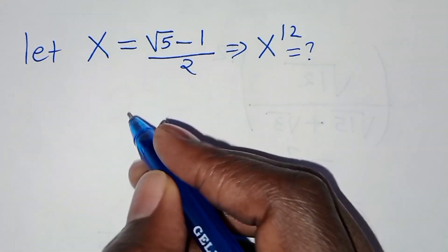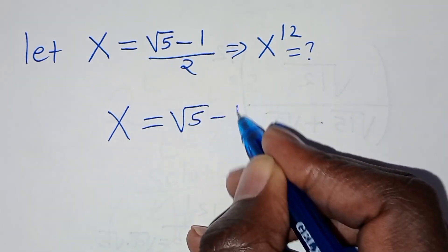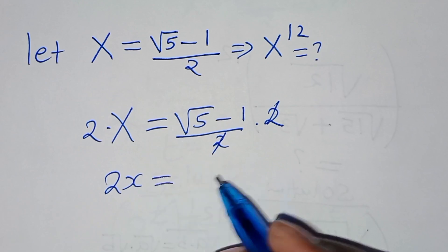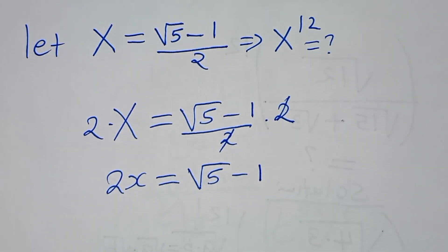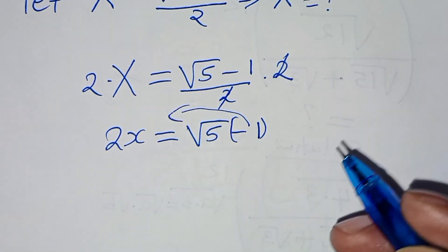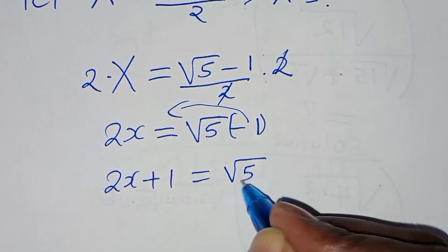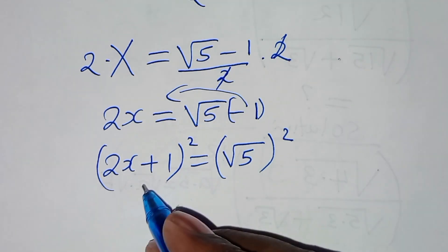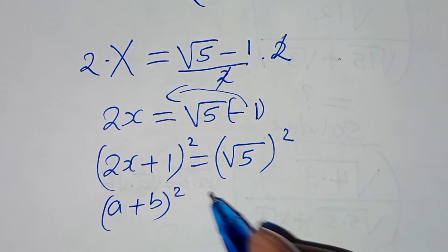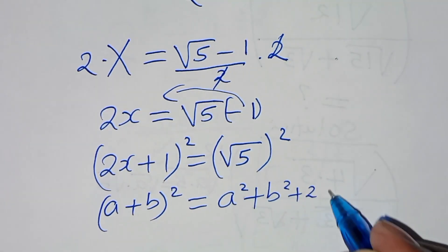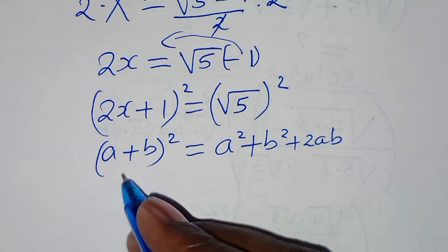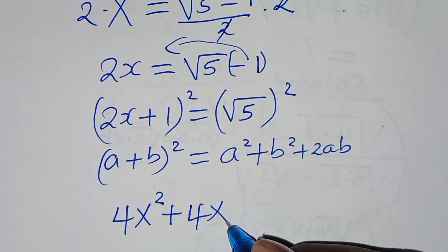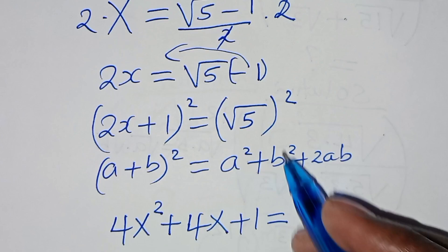From x equals square root of 5 subtract 1 over 2, we multiply both sides by 2 to get 2x equals square root of 5 subtract 1. Taking negative 1 to the left-hand side gives 2x plus 1 equals square root of 5. Now we square both sides: the left side is in the form of a plus b squared, expressed as a squared plus b squared plus 2ab. So we get 2x squared is 4x squared, then plus 4x, then plus 1, equal to square root of 5 squared, which is 5.